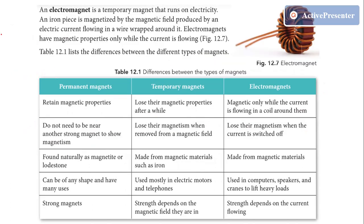Now let's talk about electromagnets. From the word itself — 'electro' and 'magnet' — you can assume there is some relation with electricity. So an electromagnet is a kind of temporary magnet which runs on electricity — that is, it depends on electricity to behave as a magnet.